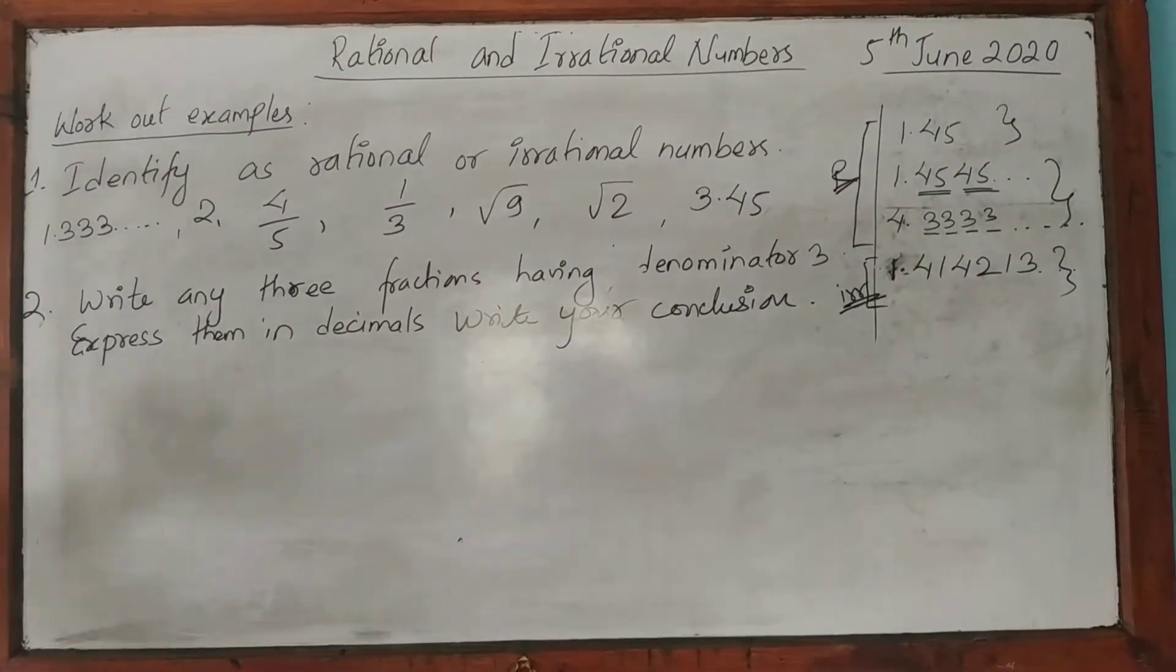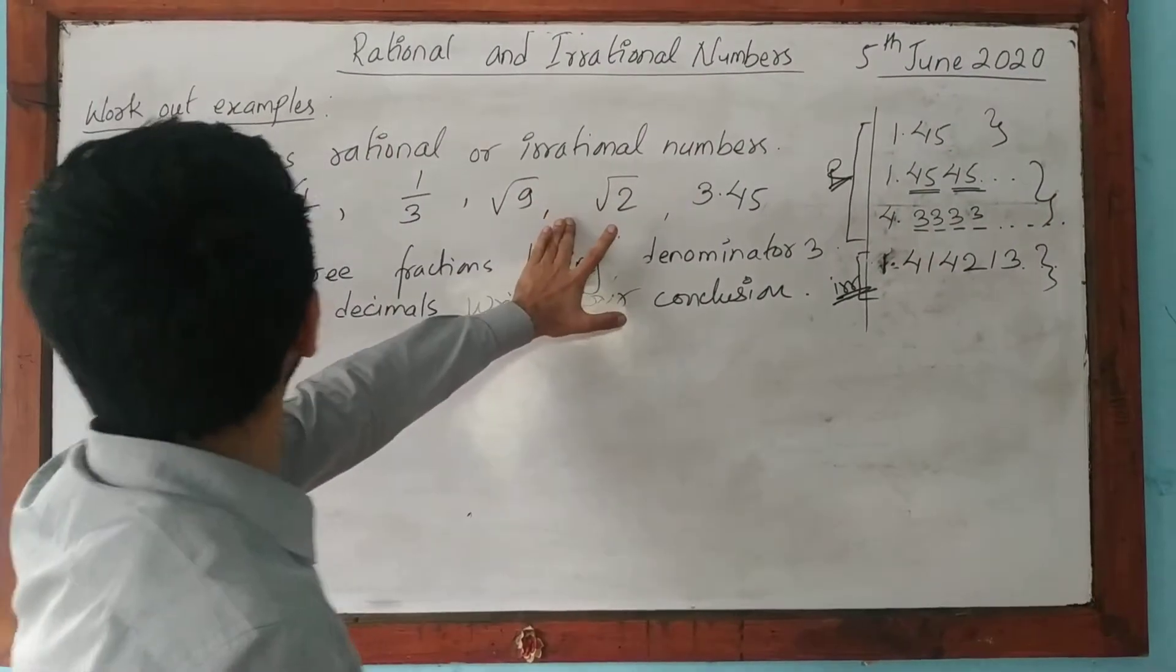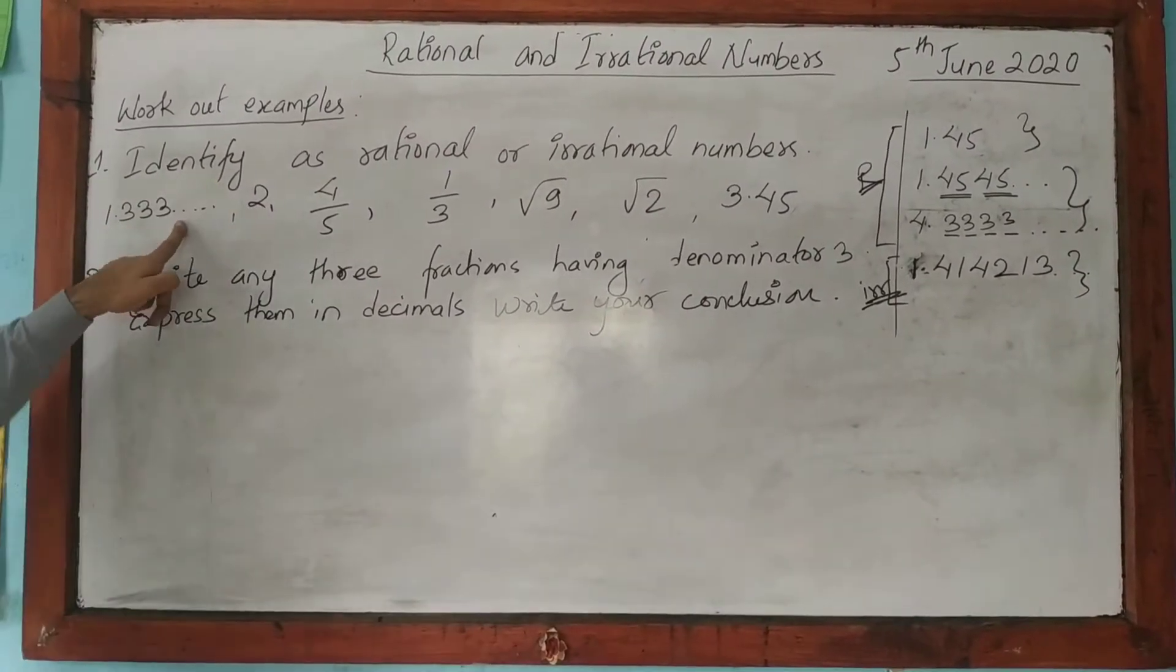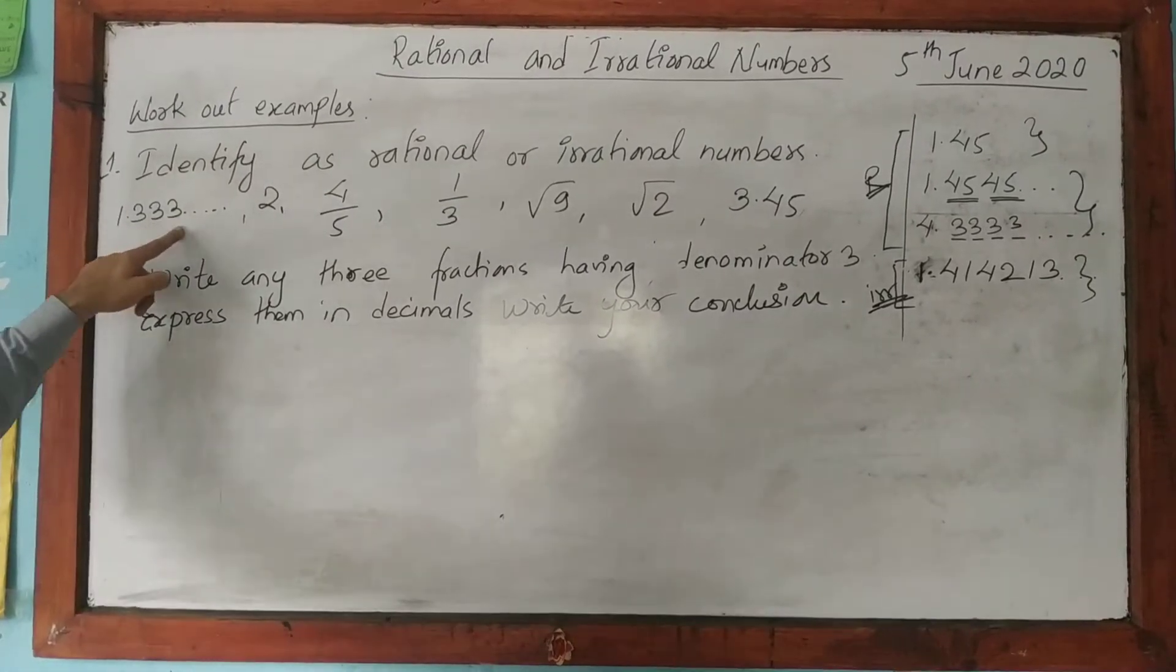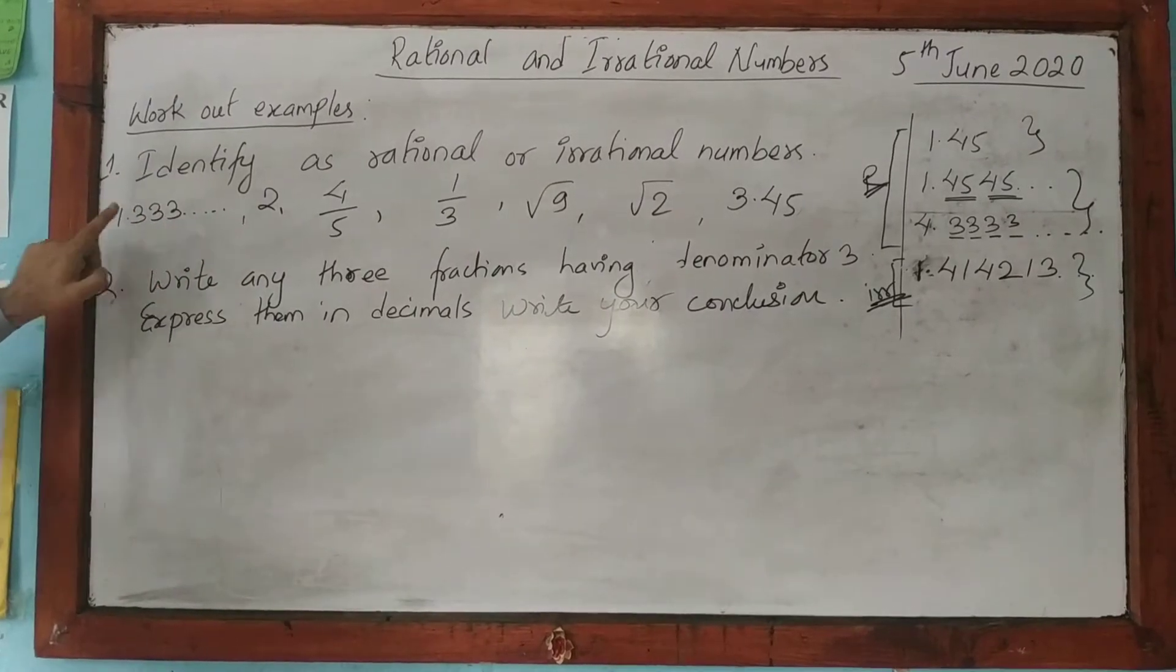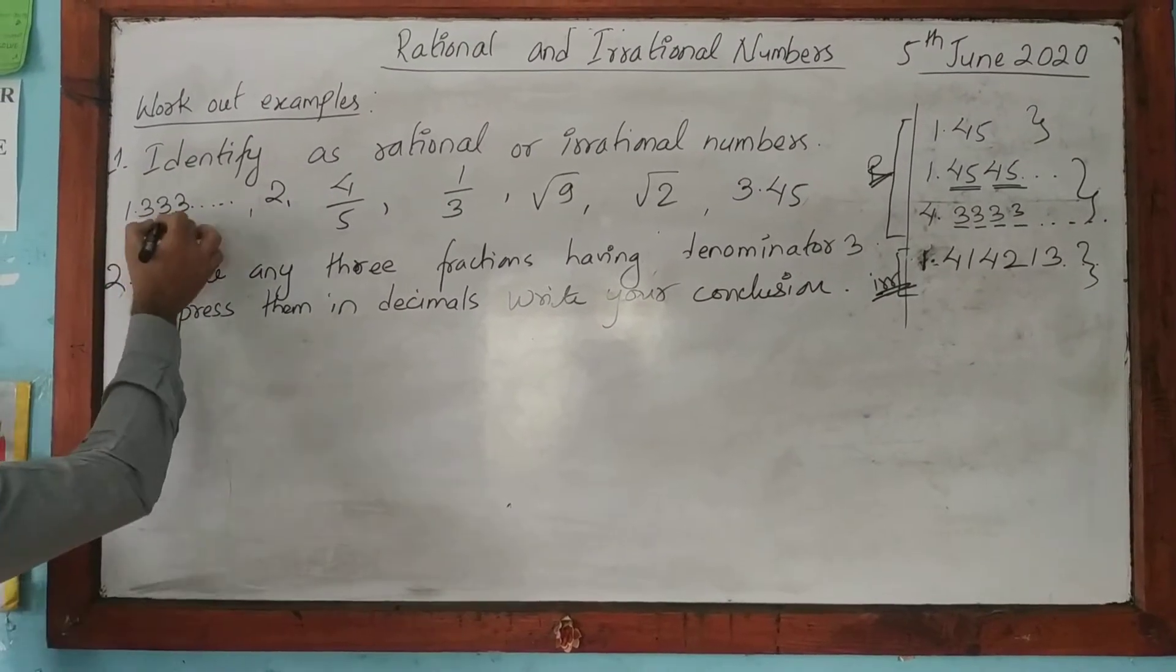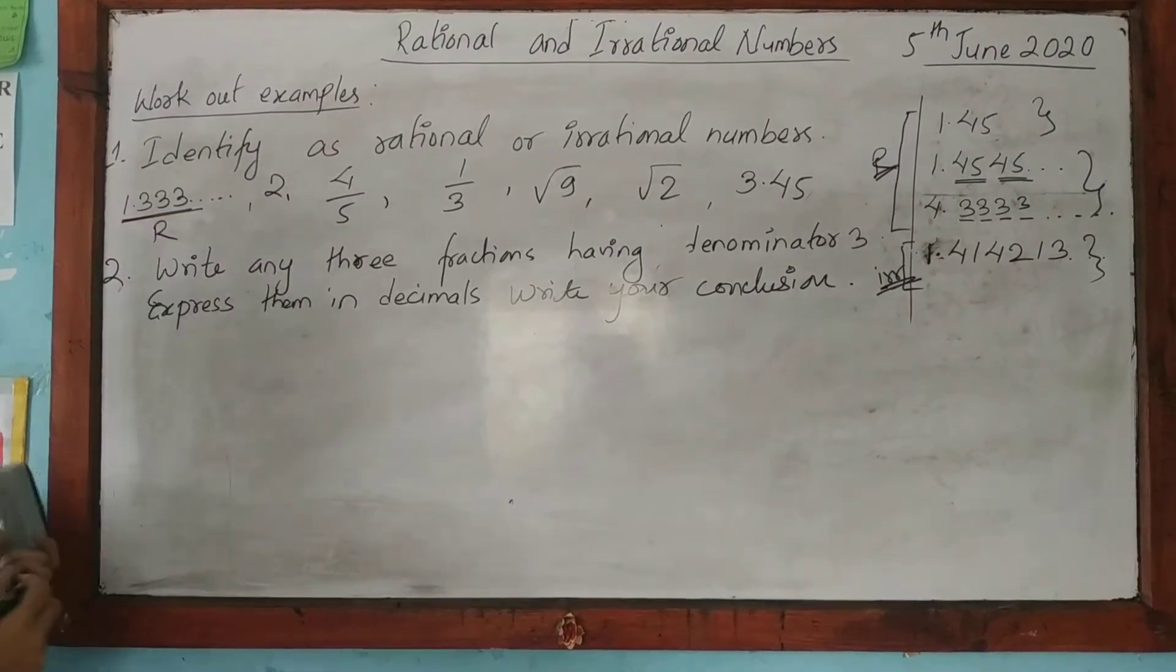And today we have some worked examples, identifying rational or irrational numbers. Look here, the first one is a decimal itself, 1.333. That means the first one, we have to identify that the decimal is non-terminating, it is not ending. If not ending, then we have to identify whether a digit or a group of digits are recurring or not. See, recurring. That means it is a rational number.